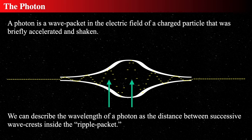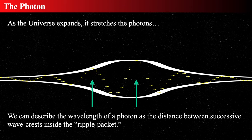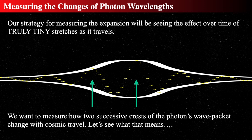Now if the universe expands and stretches the photon, the distance between those two wave crests stretches. This is an extraordinarily tiny effect, really really small. But if we add up all the effects on the photon from its emission from a distant galaxy to today — over an extraordinarily long period of time, without the photon being absorbed or re-emitted, just traveling and affected only by the expansion of the universe — all of those little tiny stretches add up.